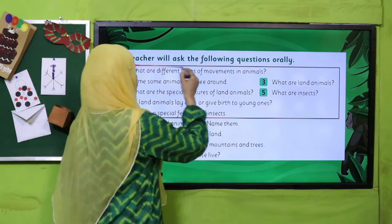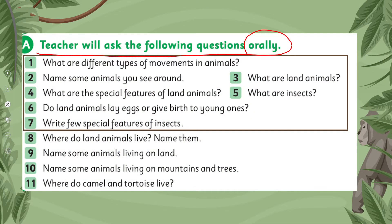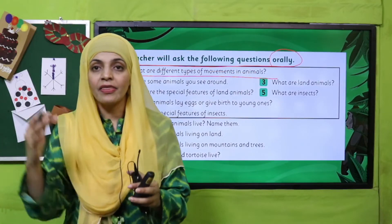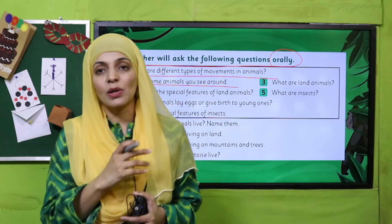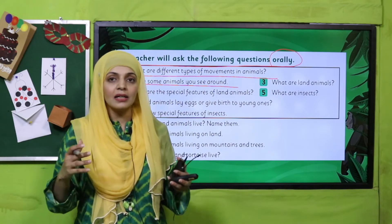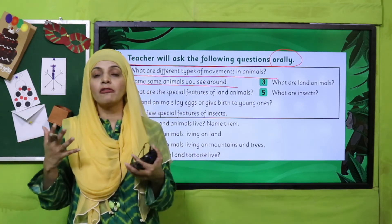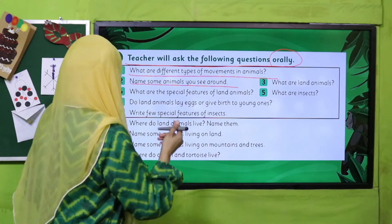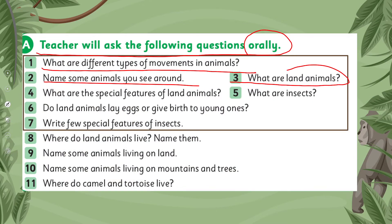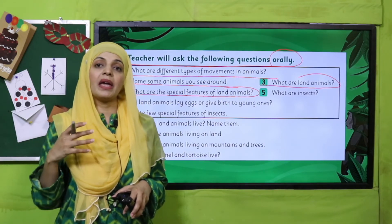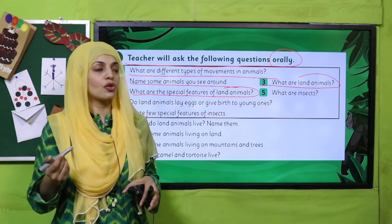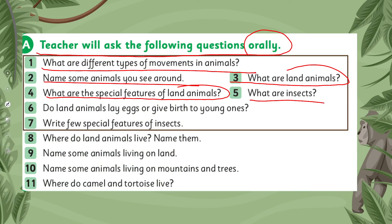Now is the time for evaluation. The teacher will ask the following questions orally. Different types of movements in animals — they can run, jump, crawl, or fly. Some animals you see around you: horse, duck, goat, ants, cockroaches, and flies. Animals that live entirely on land are called land animals. The special features of land animals are: they make their homes on land, they walk on legs, they may crawl or slither. Insects are tiny with two or more legs.